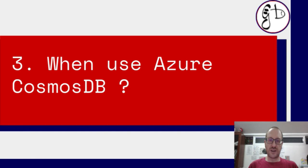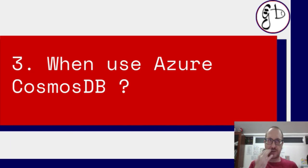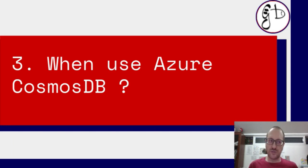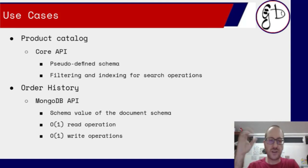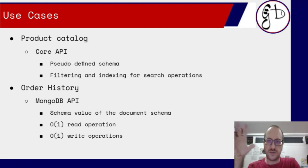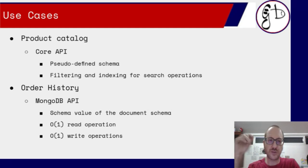When should I use Azure Cosmos DB? Let's look at real-life examples using an e-commerce application. For the product catalog, use the Core API. Why? First, for the pseudo-defined schema. Second, for filtering and indexing for search operations. In every e-commerce, you need to search by category or subcategory, order by price ascending or descending, and run other queries using indexes over not-yet-defined columns.